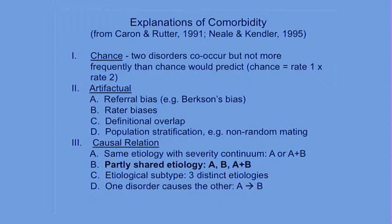There are other artifactual reasons for comorbidity. There's referral bias — Berkson's bias — meaning clinically ascertained samples produce more comorbid cases. For DSM disorders there are rater biases: if the same parent is evaluating all possible diagnoses, you can get halo effects. A parent who's really worried about their child will rate everything highly on the CBCL. You want to make sure comorbidity is not just due to rater biases.